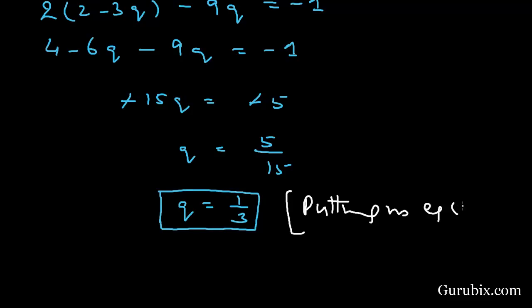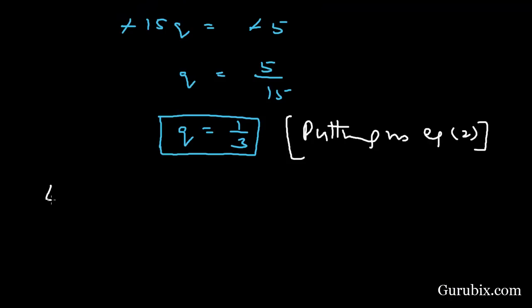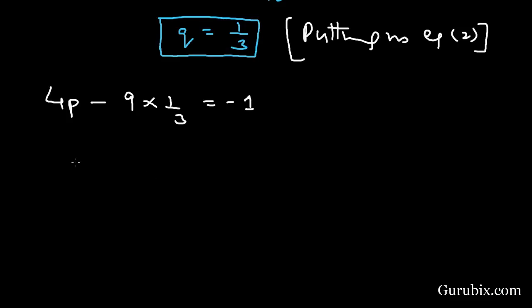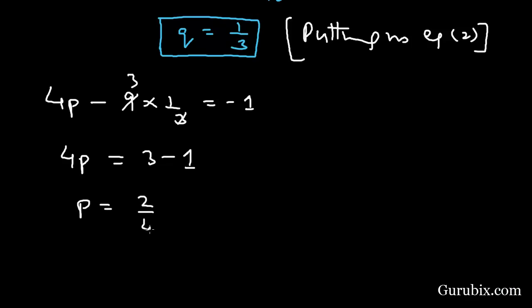Now we substitute Q = 1/3 back into equation number 2: 4P - 9(1/3) = -1. We can cancel, giving 4P - 3 = -1, so P = 2/4, which means P = 1/2.